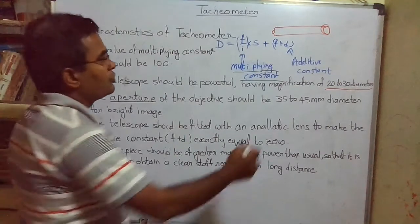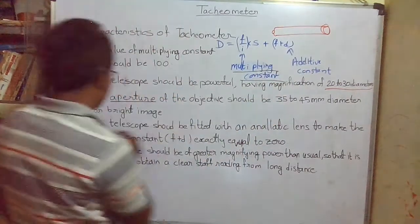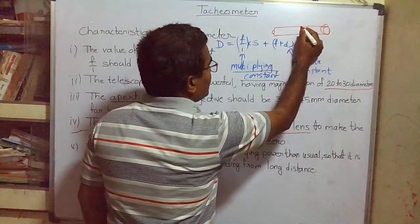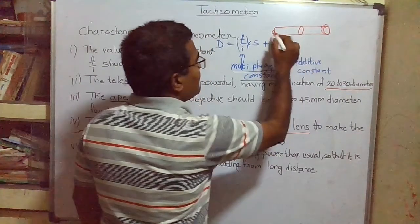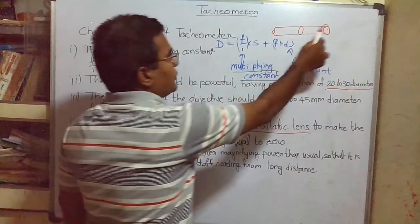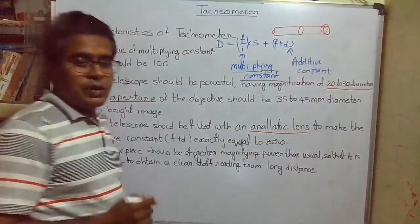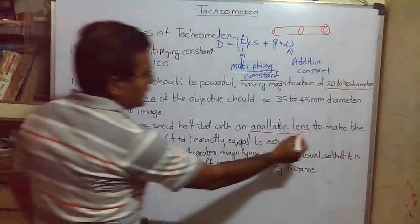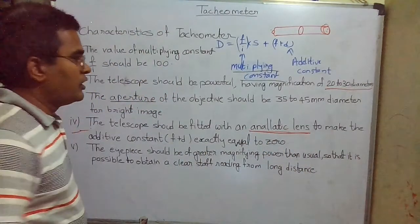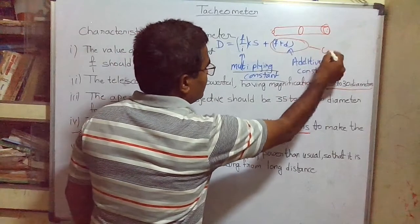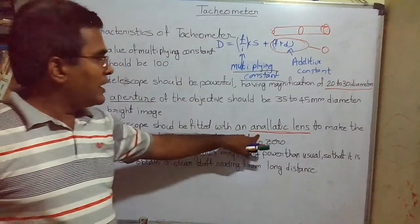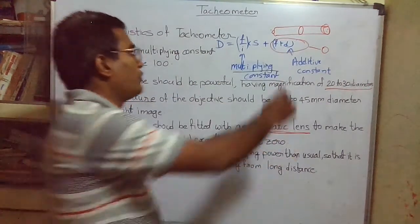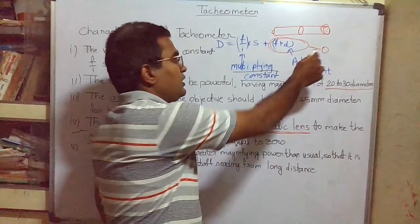The fourth characteristic is that the telescope should be fitted with an analytic lens. The analytic lens is a convex lens provided in between the eyepiece and the object glass. The function of this analytic lens is to make the additive constant f + d equal to zero. By introducing an analytic lens in between the eyepiece and object glass, we can make the additive constant equal to zero.